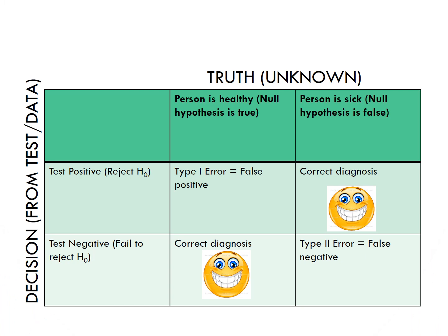In table form, the null hypothesis is that someone is healthy and the alternative is that the person is sick. We can either decide to reject the null and have a positive test based on our data, or we can decide that the test is negative and fail to reject the null. A positive test when the person is healthy is a false positive — that's a type 1 error. A negative test when the person is sick is a false negative, or a type 2 error.